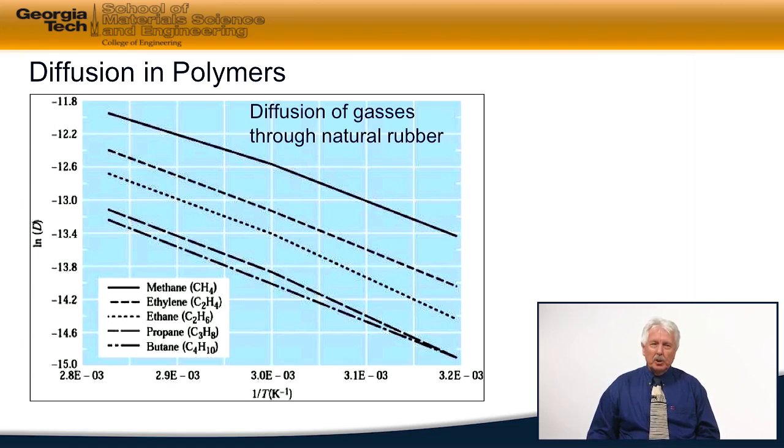Exactly as you would expect to see in this set of data, as the gas becomes larger and you're diffusing through the same membrane, what you will see is a reduction in the rate of diffusion that follows this size effect.